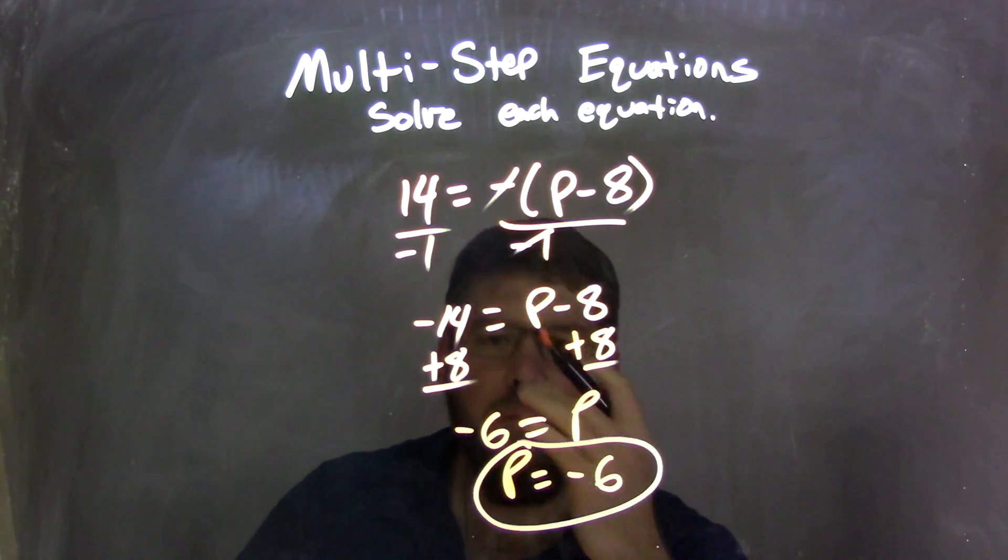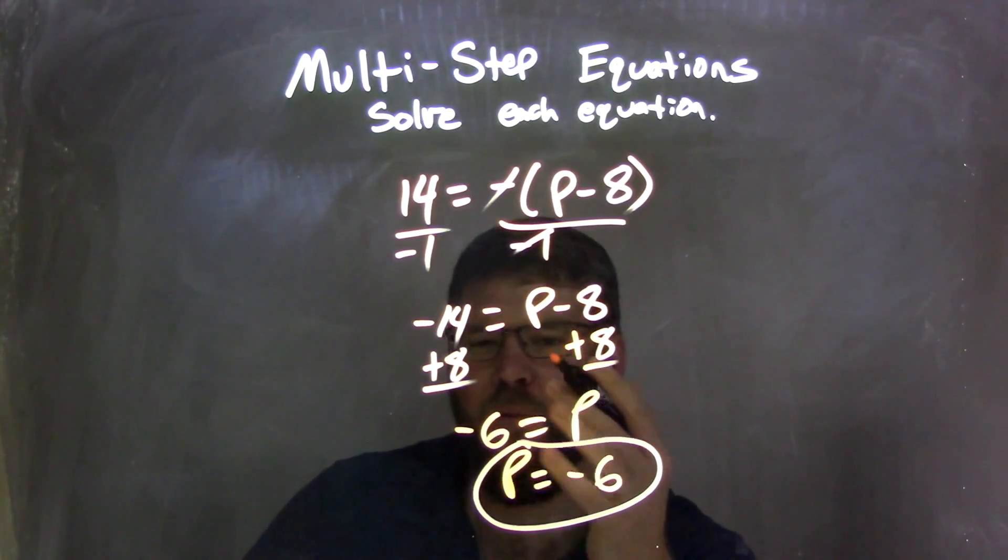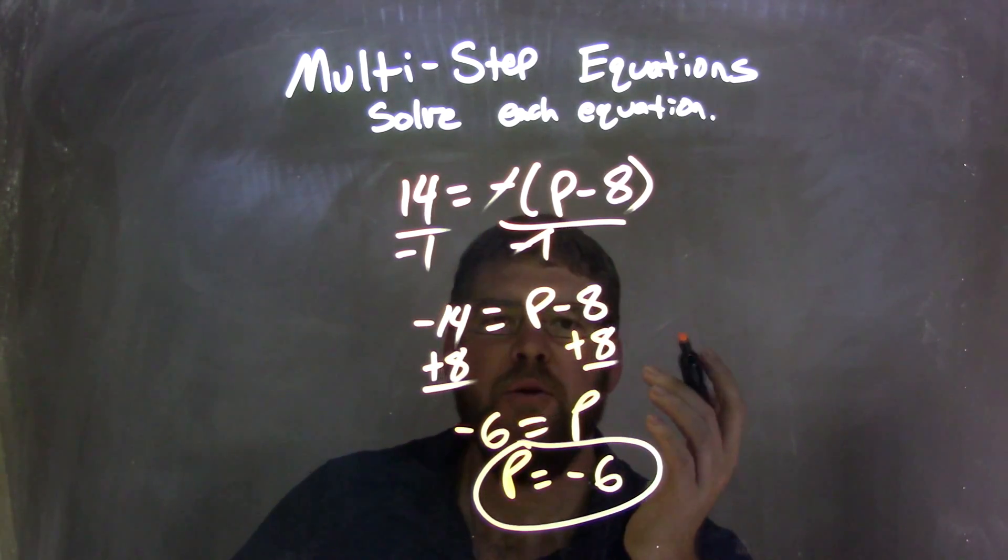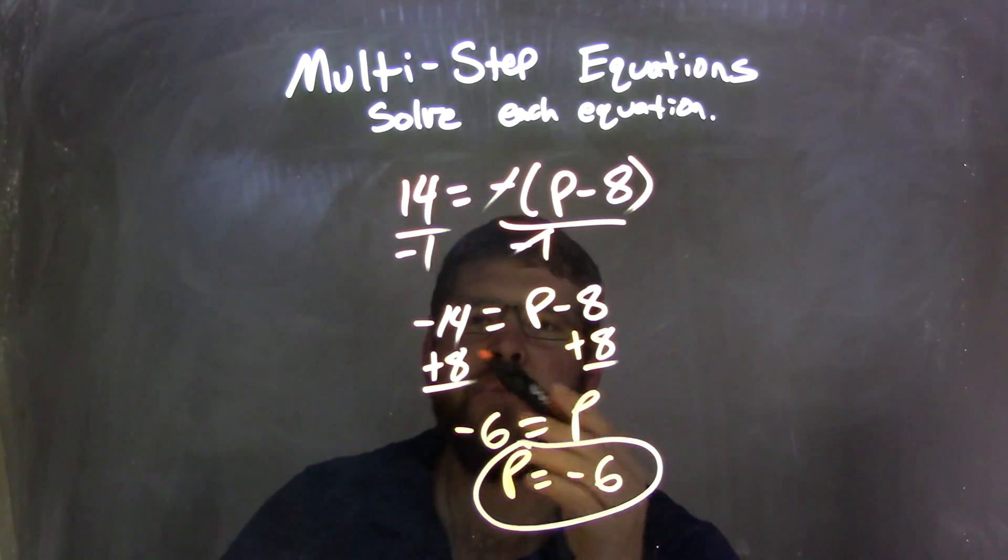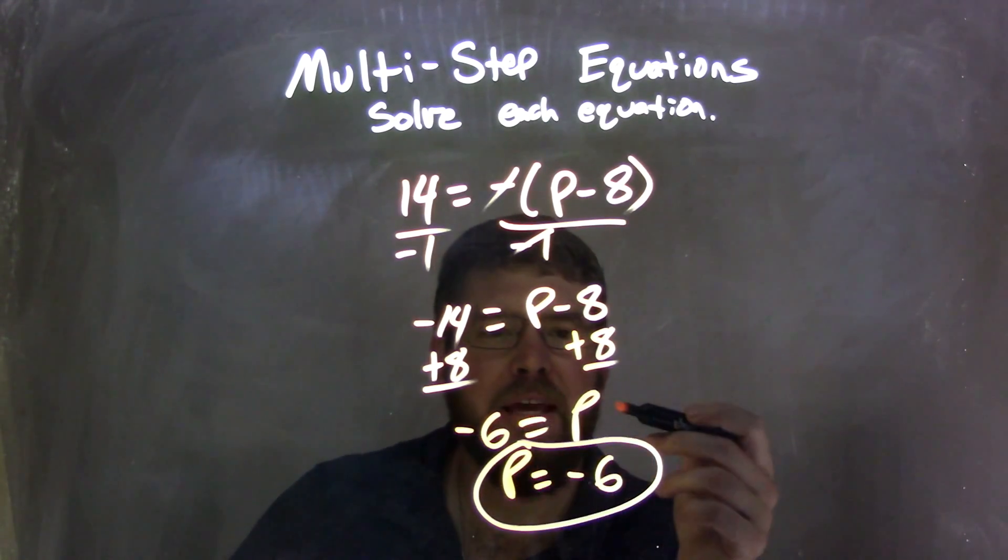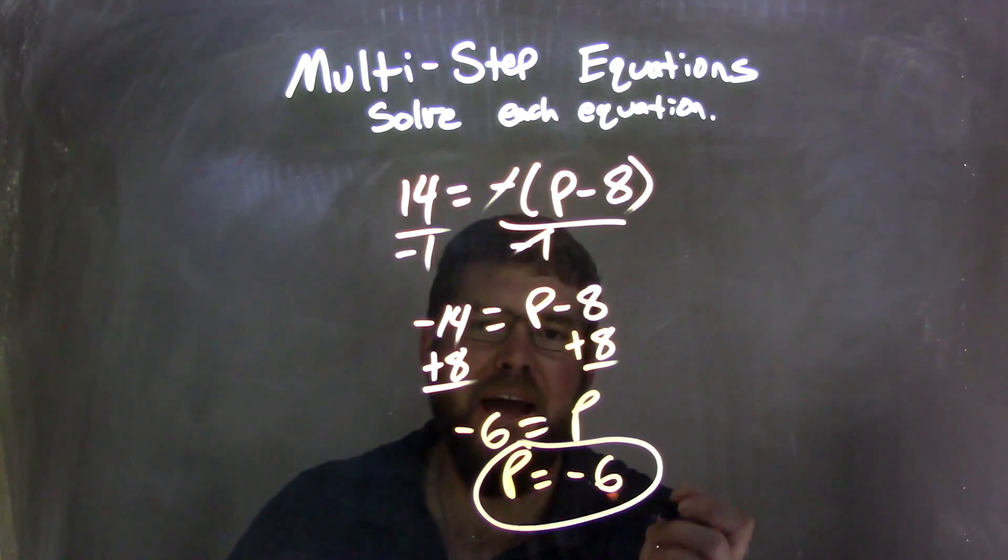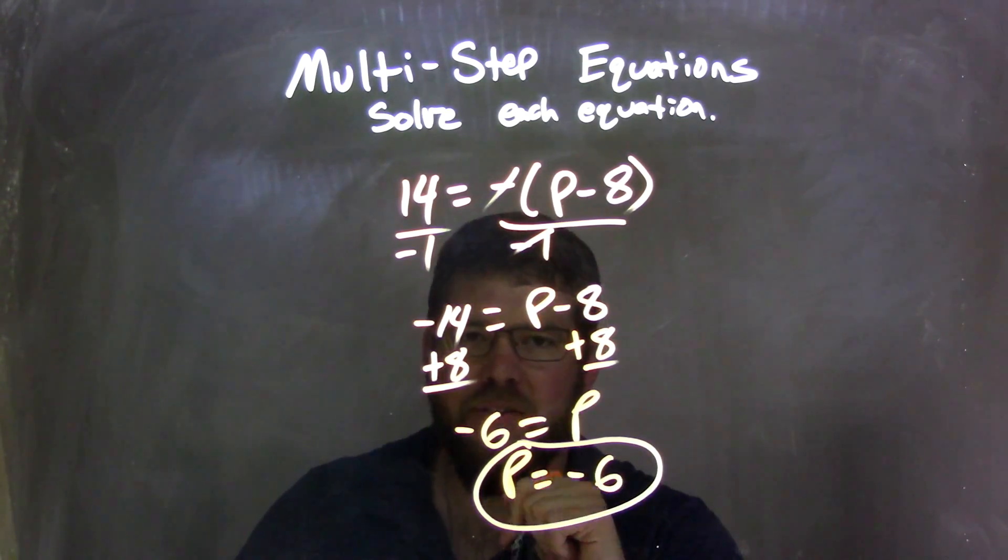And if you have trouble with subtracting a negative or a negative adding a positive and when it comes out negative, I have other videos where I solve problems just like that. So a negative 14 plus 8 came out to be a negative 6. So negative 6 equals p. I rearranged that so p comes first, and so I have p equals a negative 6, which is my final answer.